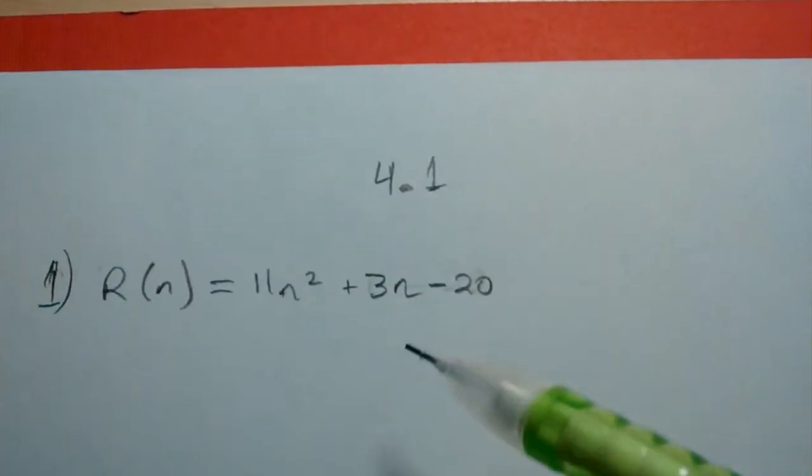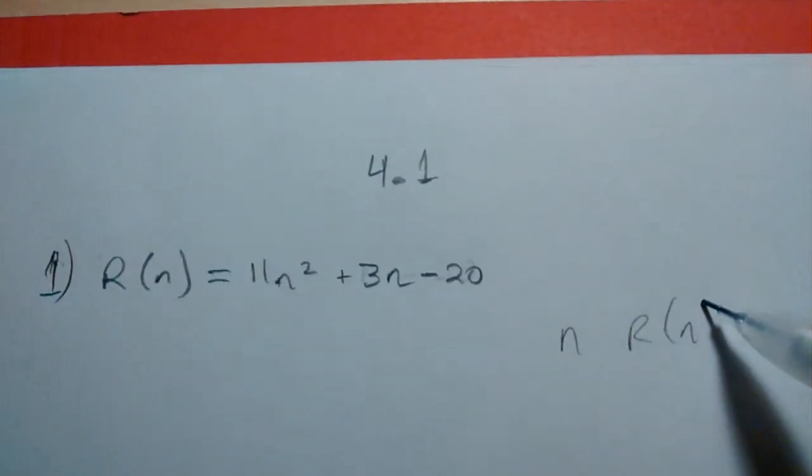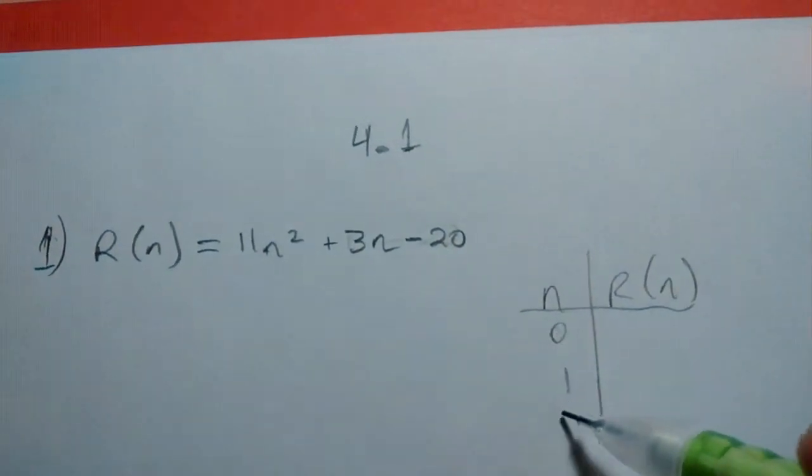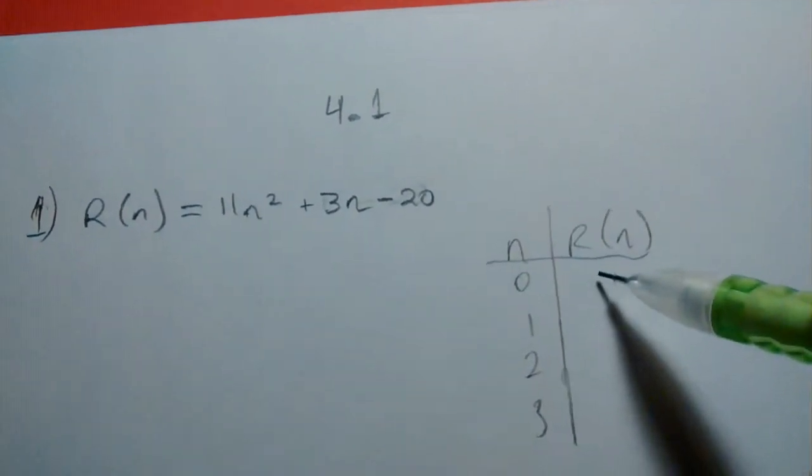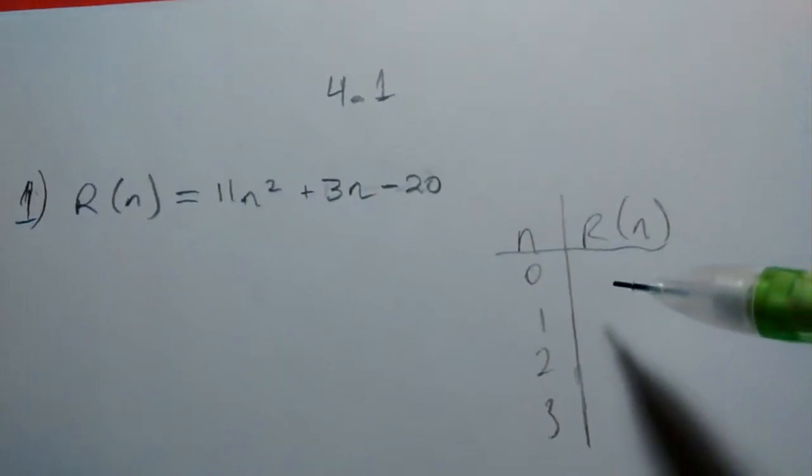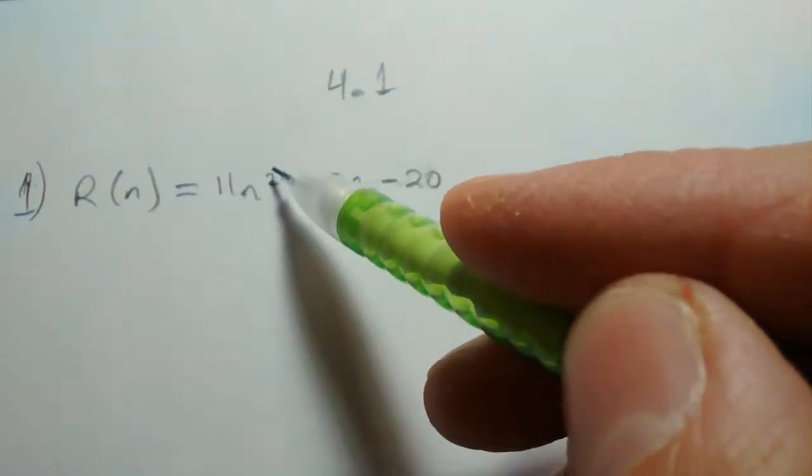And if you were to make a table of values of n and r of n values, and get some values here, you would find the average rate of change between the pair of points is not the same. And it's because of this squared term here of this input variable.